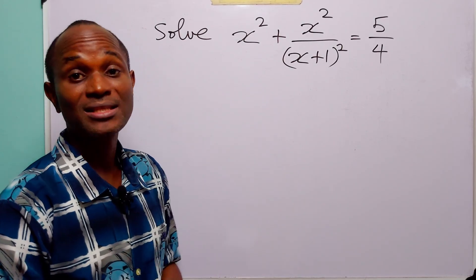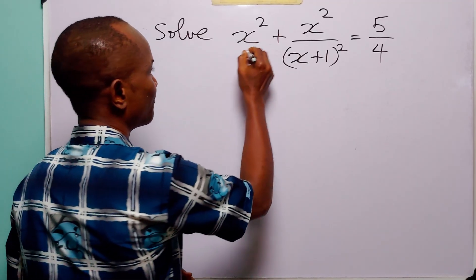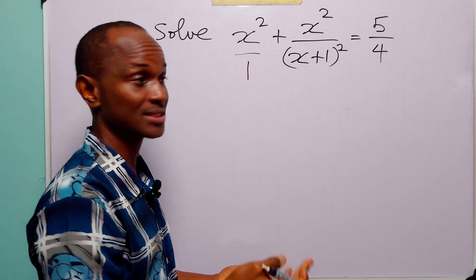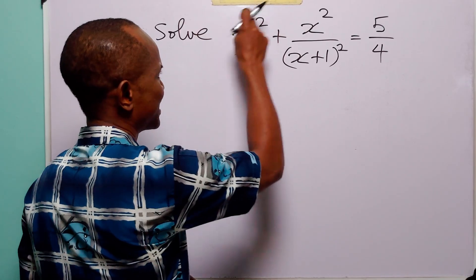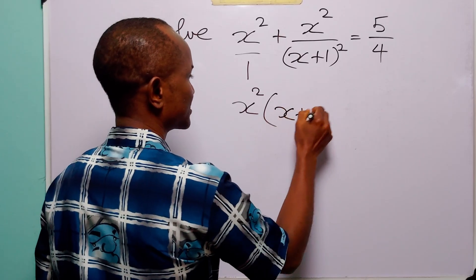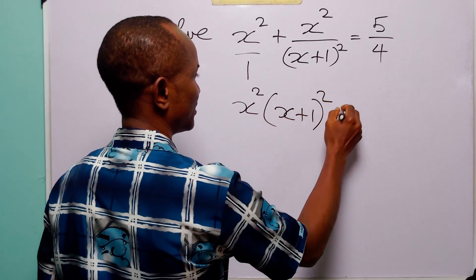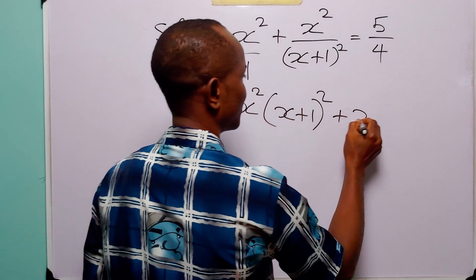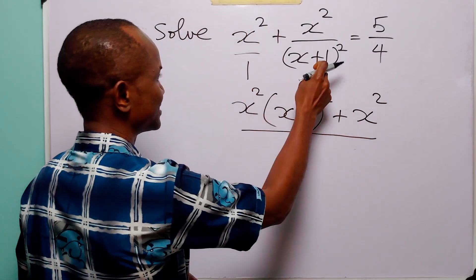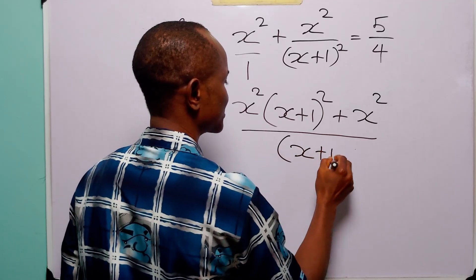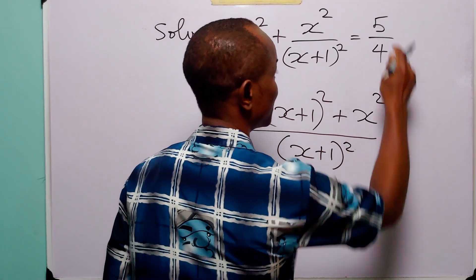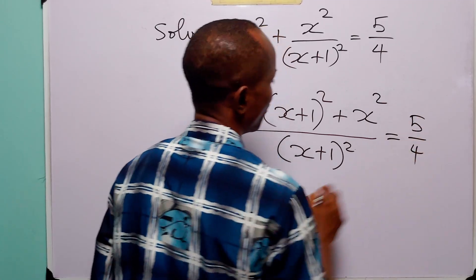We can start this solution by combining the two fractions on the left-hand side into one single unit. We do that by multiplying: x squared multiplied by x plus 1 squared in the denominator. Then we get x squared from one cross-multiplication, and x plus 1 squared from the other. This is still equal to 5 over 4.